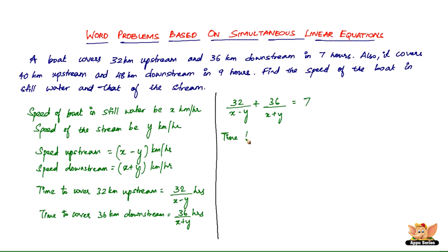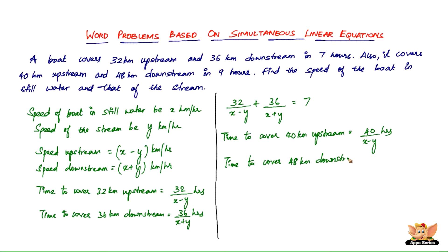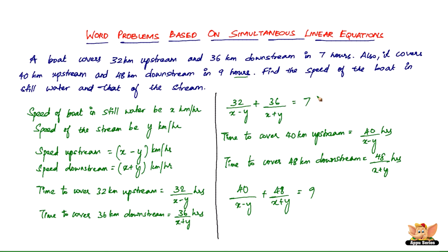Similarly, the time to cover 40 kilometers upstream is 40 divided by (x minus y) hours, and the time to cover 48 kilometers downstream is 48 divided by (x plus y) hours. Since this totals 9 hours, we get the second equation: 40 divided by (x minus y) plus 48 divided by (x plus y) equals 9.